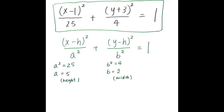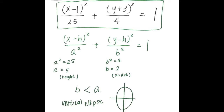To graph the ellipse, we need to first find a and b. a squared equals 25, so a equals 5, which is the height. b squared equals 4, so b equals 2, which is the width. We can see that b is smaller than a, which means the width is smaller than the height, so we have a vertical ellipse.